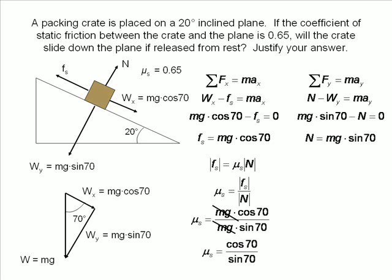This leaves us with the coefficient of static friction equaling the ratio between cosine 70 and sine of 70. The coefficient of friction created by an angle of 20 degrees is 0.36. Since the coefficient is 0.65, 20 degrees is not enough slope to get the crate sliding.